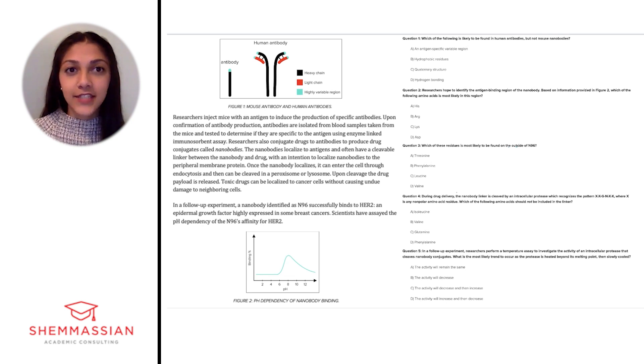I'll be going through the passage at a slower pace than what you should be doing on test day just to ensure that we're able to review it in detail. So let's get started. The passage starts out with a figure depicting a mouse antibody and a human antibody with a heavy chain, light chain, and highly variable regions color coded. The passage then reads,